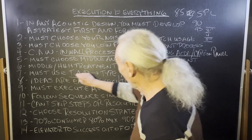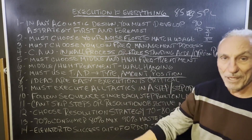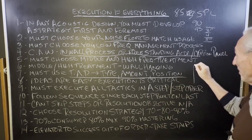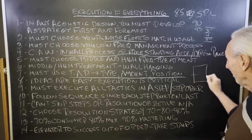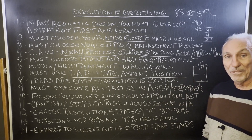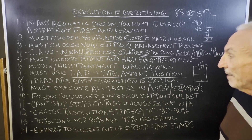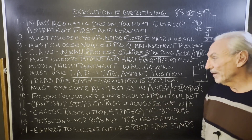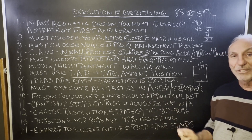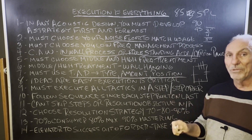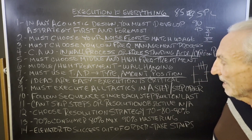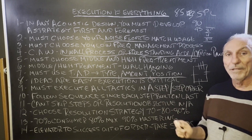You must use TAP: Type, Amount, and Position. We have to know what treatment type we're going to use, how much of it, and where we're going to place it — because every dimension in our room is different, giving us a different problem all the way around the room. We have to execute all tactics in a step-by-step manner. Ideas are easy; it's the execution that's the hard part. Follow the sequence and you'll be fine — you can't skip steps or your resolution objective will not be achieved.